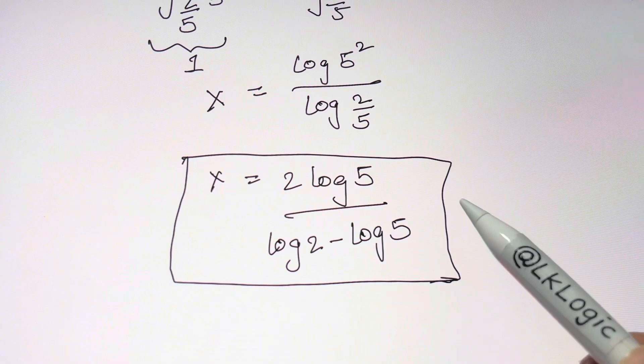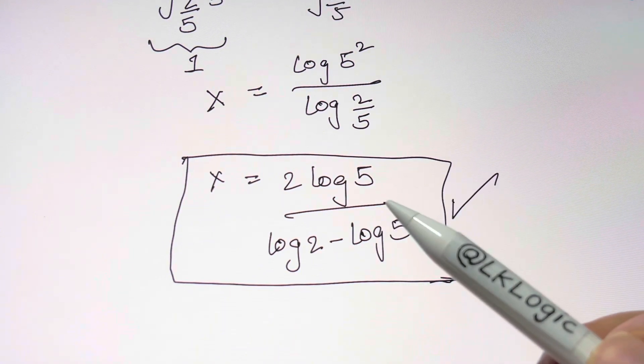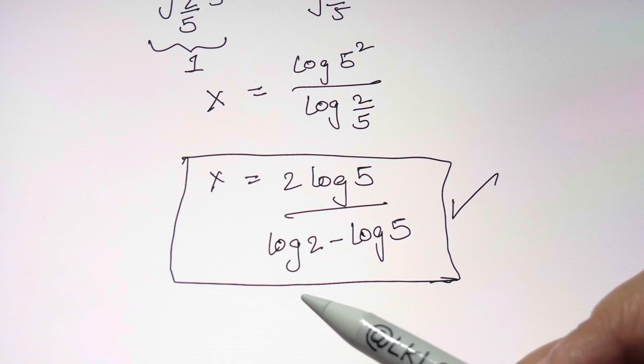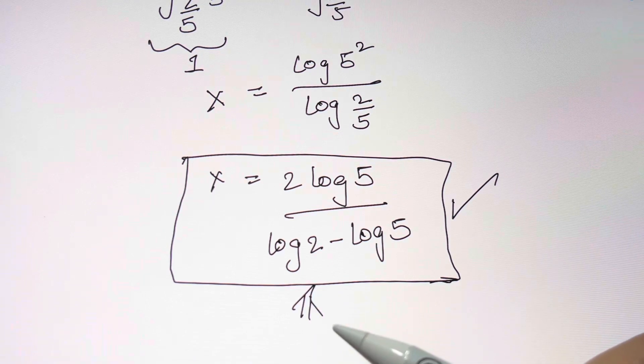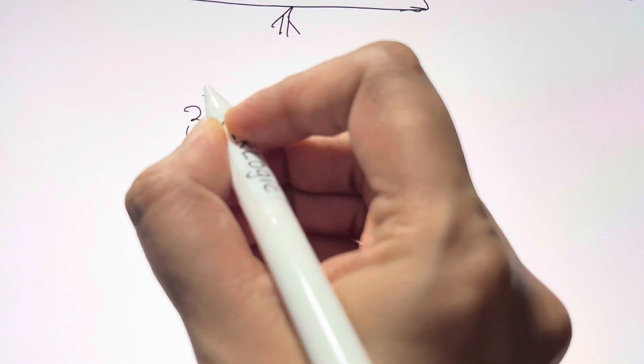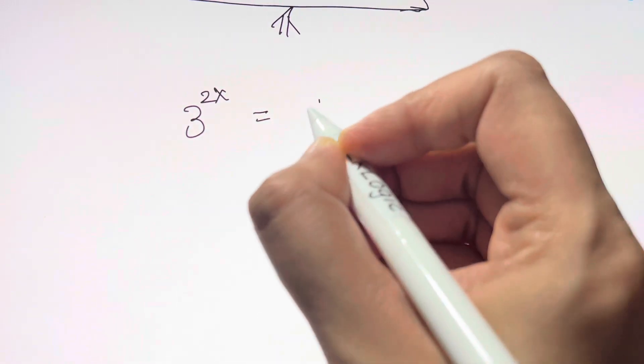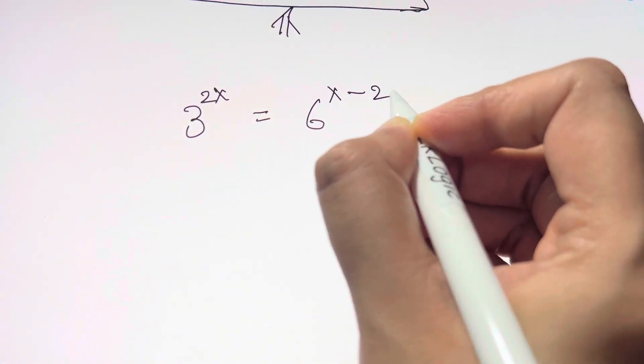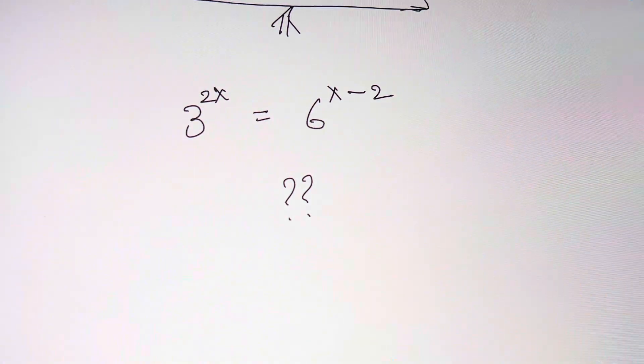This is how we can find the values of x. Now you can even take natural log, this is easier to calculate using the calculator. You do this one: 3^(2x) equals 6^(x-2). So what's the answer? Let me know in the comments.